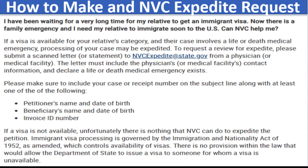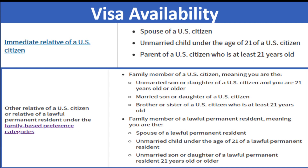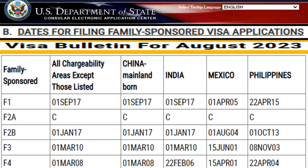Now let's talk about the first requirement: visa availability. For immediate relatives of US citizens — such as the spouse of a US citizen, an unmarried child under the age of 21 of a US citizen, and a parent of a US citizen who is at least 21 years old — the visa is always available. So if you have a good medical reason, you can expedite your case. For the other family-based preference categories such as F1, F2A, F2B, F3, and F4, the priority date must be current and your case must be at NVC.